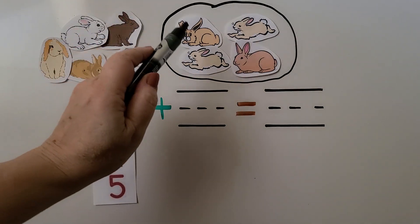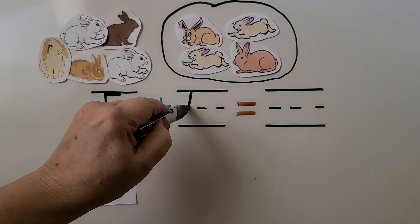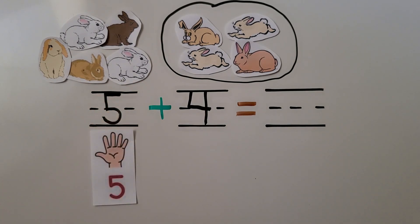Let's count them. One, two, three, four. We can write the four. We have five and four more that we're adding.